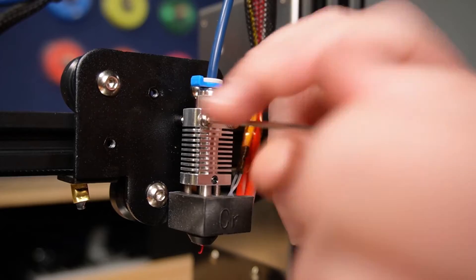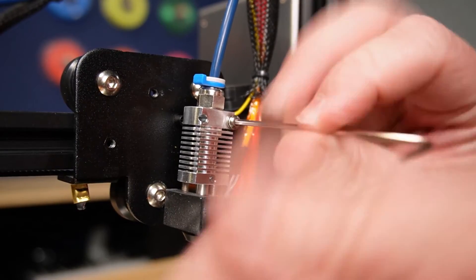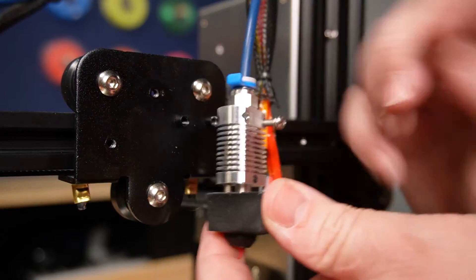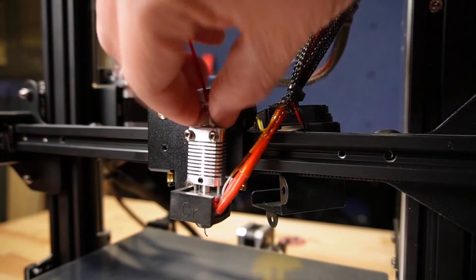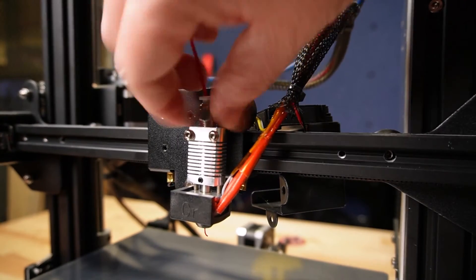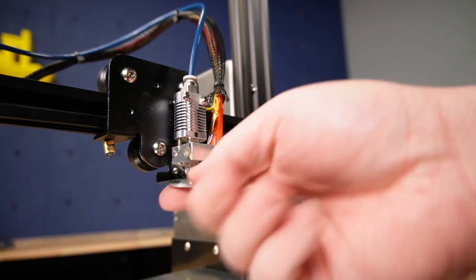This whole assembly can usually be removed by just taking out these two allen screws from the heat sink. Although if you need to remove the pneumatic joint at the top, it makes sense to do that while the heat sink is still attached to the x-axis. This also goes for the nozzle.